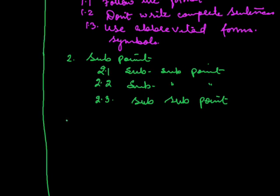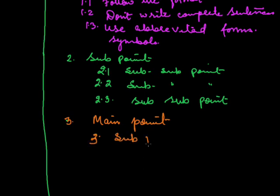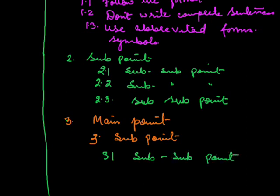Main point number 3: again you will write the sub-point, then 3.1 as sub-sub point, 3.2 as sub-sub point, and likewise. You can make up to five main points in your notes.